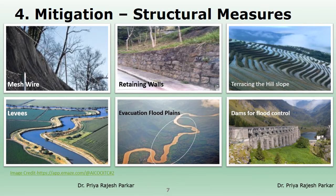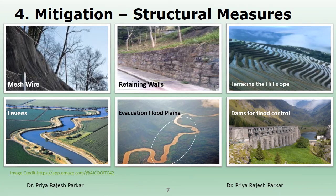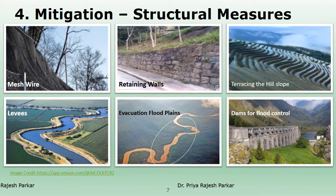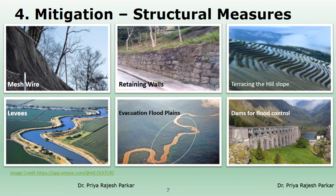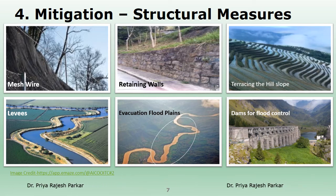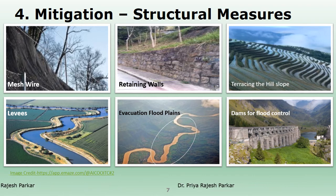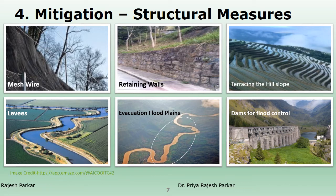Structural measures undertaken in disaster mitigation help reduce loss of lives and property. In the first photograph, hill slopes are covered by wire mesh. In the second photo, a retaining wall has been constructed at the bottom of the hill. At some places, the hill is cut into terraces to minimize the slope and avoid incidences of landslides. In flood-prone areas, levees are constructed along the river banks.